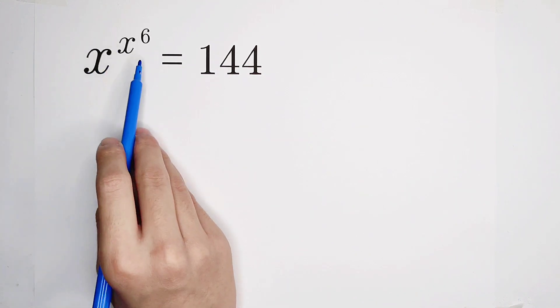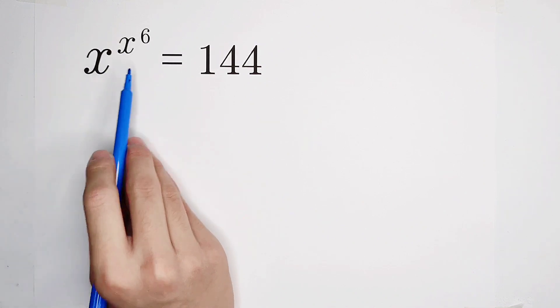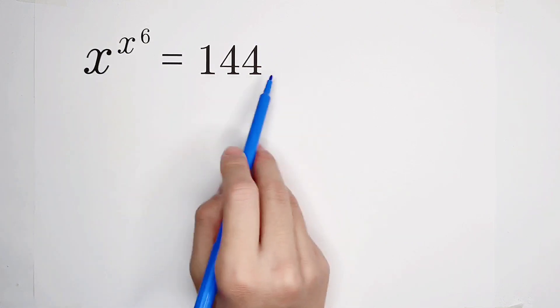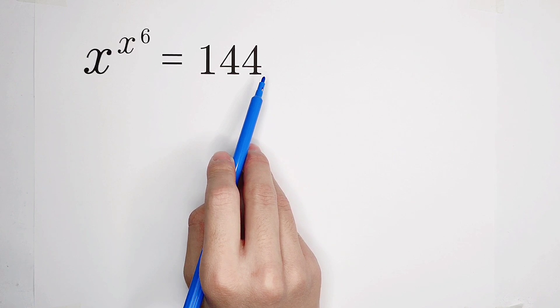x, x, 6. There are two x's, however, only one 6. At the right-hand side, this number 144 is weird.